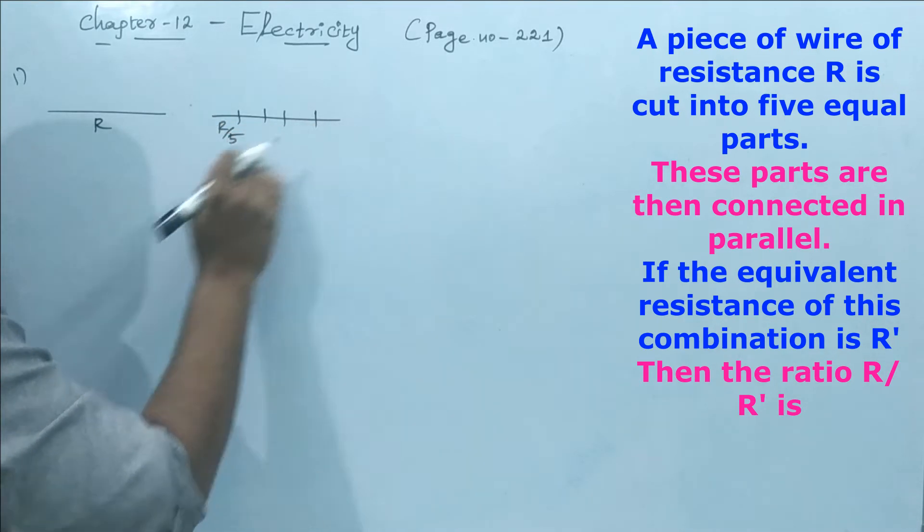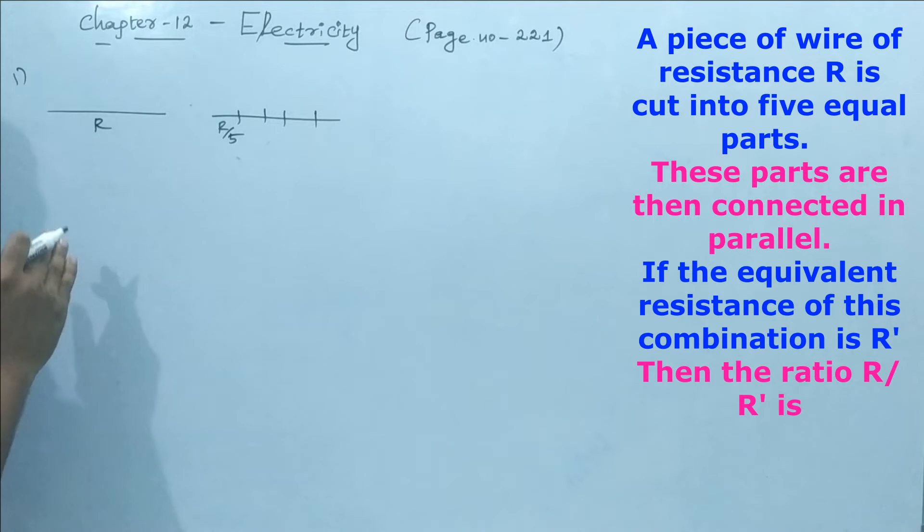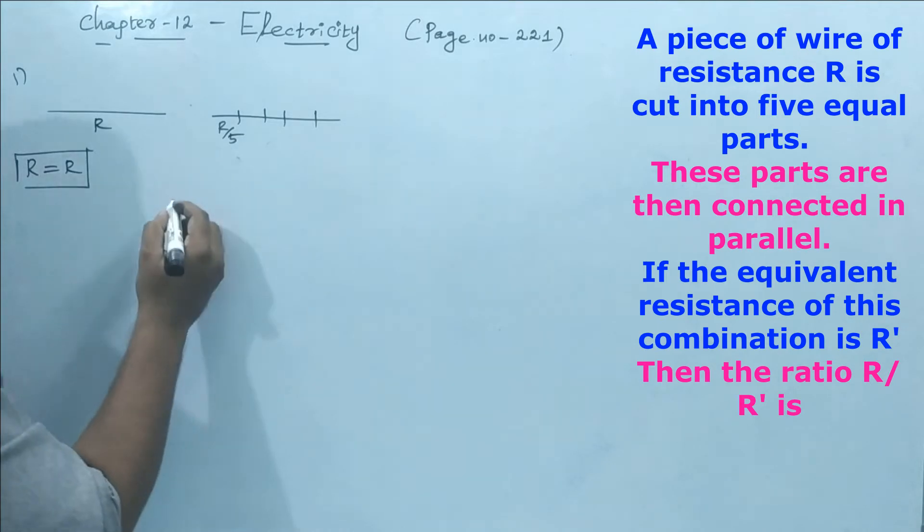So each resistance becomes R/5. They are asking about the ratio of this cut part to the original part. The original part is equal to R and we have to find this one.